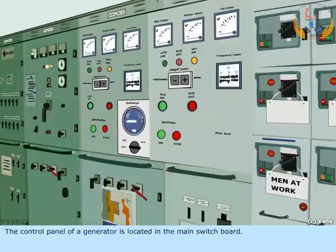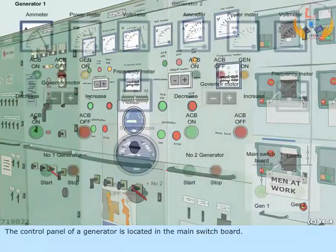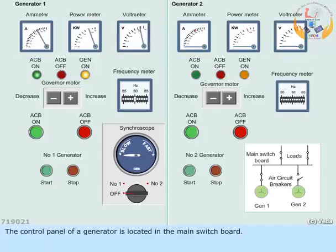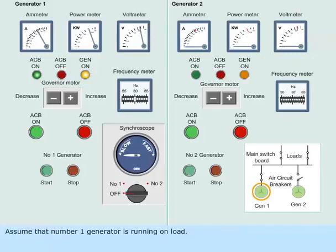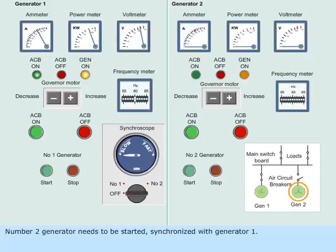The control panel of a generator is located in the main switchboard. Assume that number 1 generator is running on load. Number 2 generator needs to be started and synchronized with generator 1.